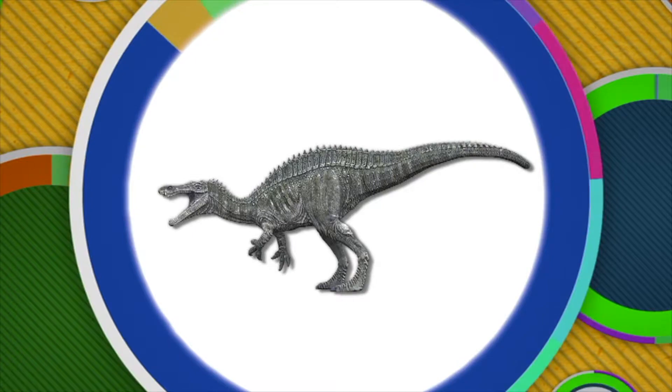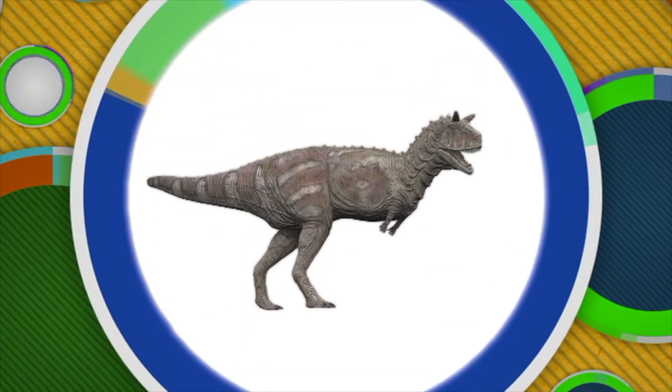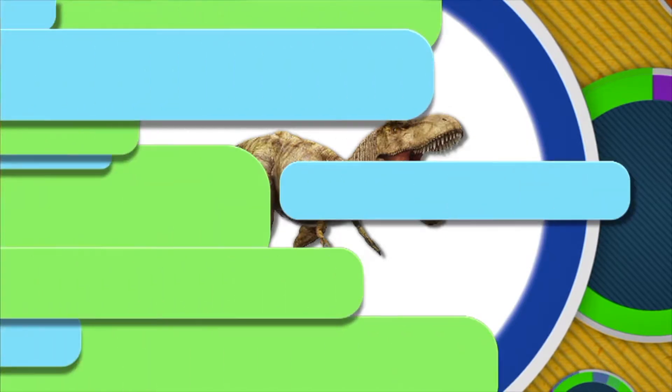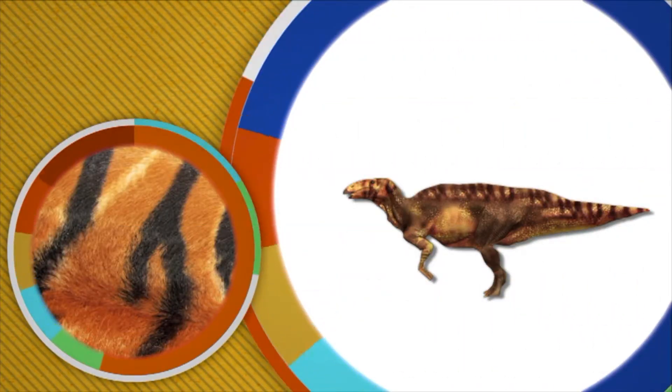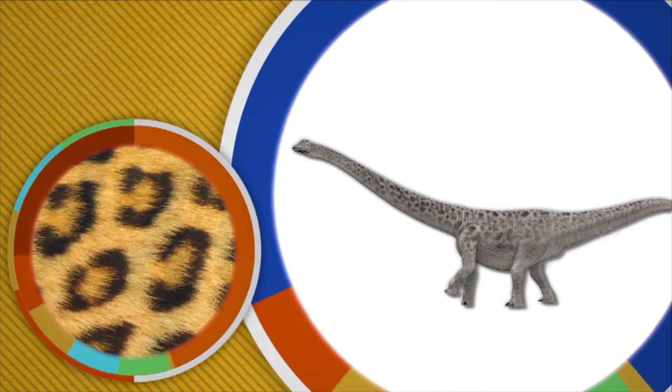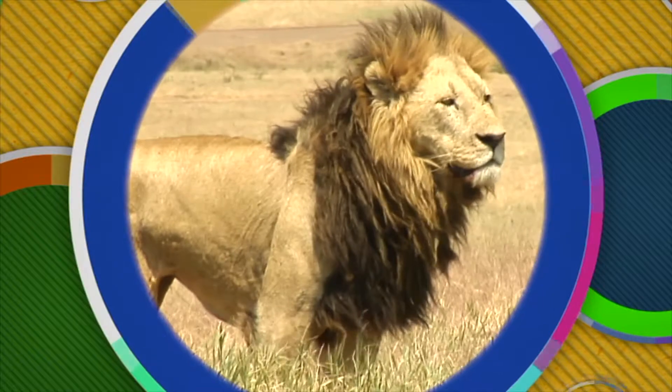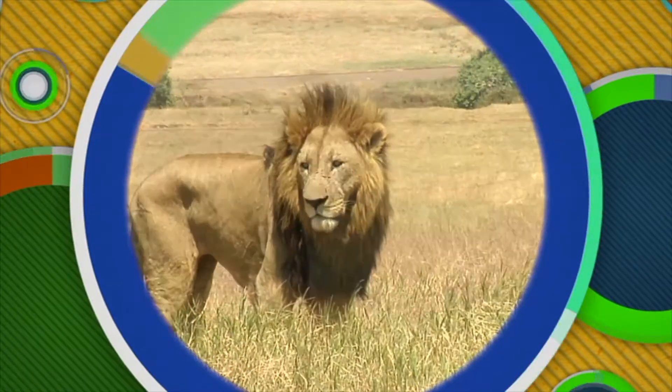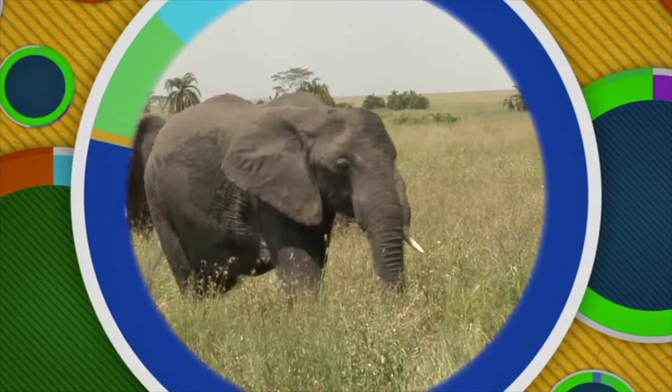Fossils give us a very good idea of what dinosaurs were like. However, the one thing that fossils haven't been able to tell us is what color or skin patterns the dinosaur had. Maybe they came in different colors — maybe some were gray, or brown, or yellow. Maybe some had stripes like zebras or tigers, or maybe spots like leopards. It's also difficult to tell what dinosaurs sounded like. Did they have a roar of a lion, or a trumpet sound like an elephant, or maybe they didn't make any noise at all?